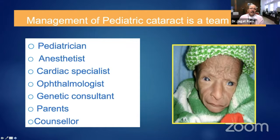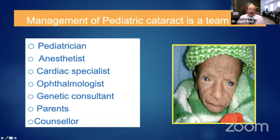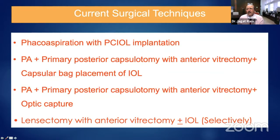Professor Vasavada rightly said that it is a team which has to do the job. We need ophthalmologists, pediatricians to examine the child for any systemic anomaly, an anesthetist, and an optometrist who plays an extremely important role in repeated refraction of these children. Parents, of course, are number one — most important. Counseling has to be done thoroughly, because we have to explain that it is not just a one-time surgery. These children need follow-up, and we must also explain the various post-operative complications.